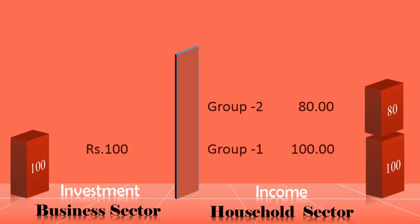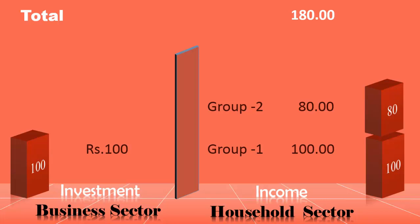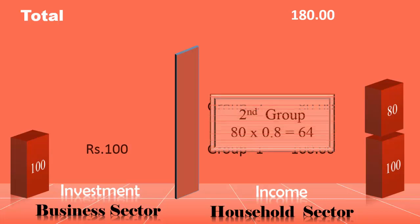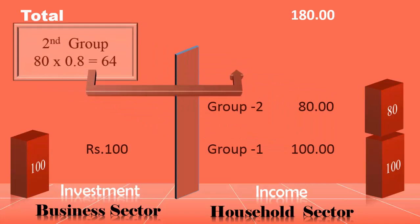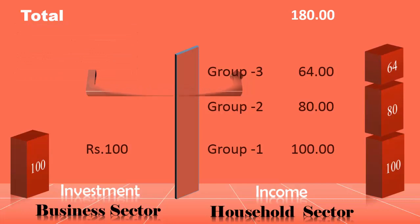At the end of the second round, new income created in the economy is 100 plus 80 equals 180 crores. The second group spends 80% of it, which goes to the third group. The net increase in income is 64 crores. At the end of the third round, the net increase in income is 244 crores.